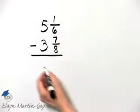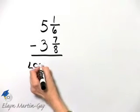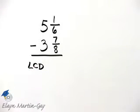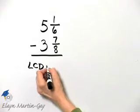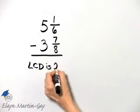So what is the least common denominator with denominators of 6 and 8? The least common denominator is 24.